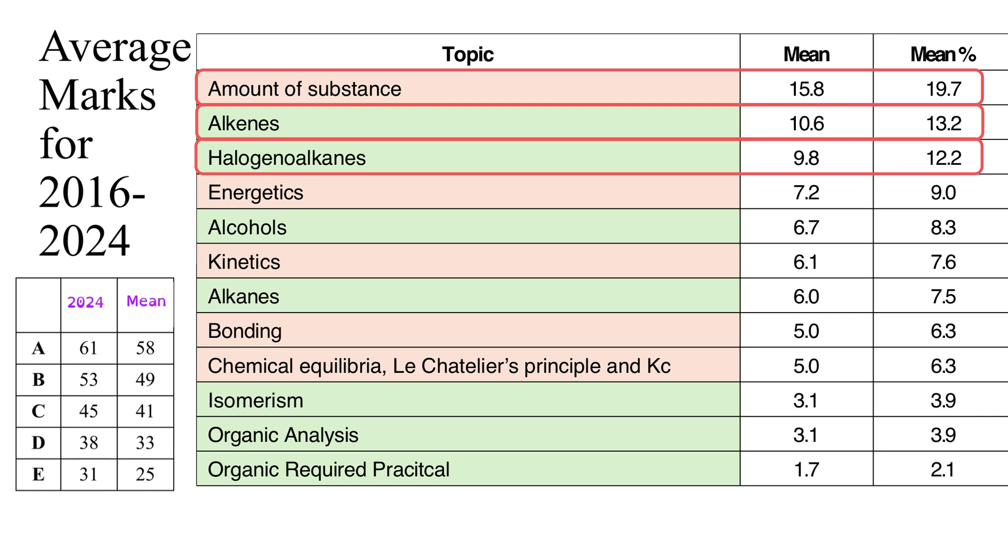And in fact on average those seven topics have been worth 62 marks out of 80. And if we look at the grade boundaries both for 2024 and on average 62 out of 80 has been worth enough to get you a grade A every single time from those seven topics out of 12.